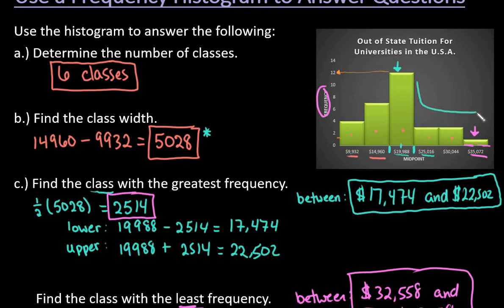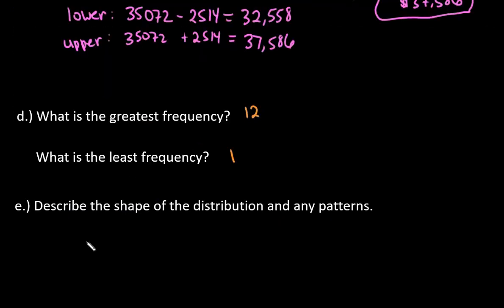With this one, we do have a tail that goes this way. This one is just going to be slightly skewed to the right because our tail goes to the right. This would be slightly skewed right.